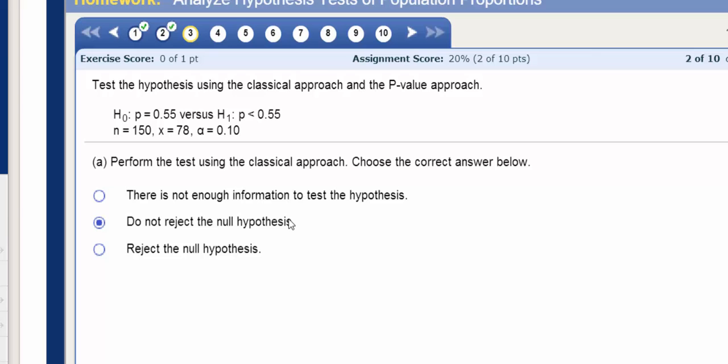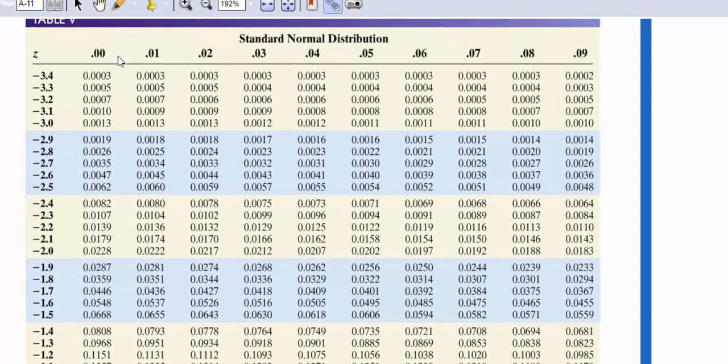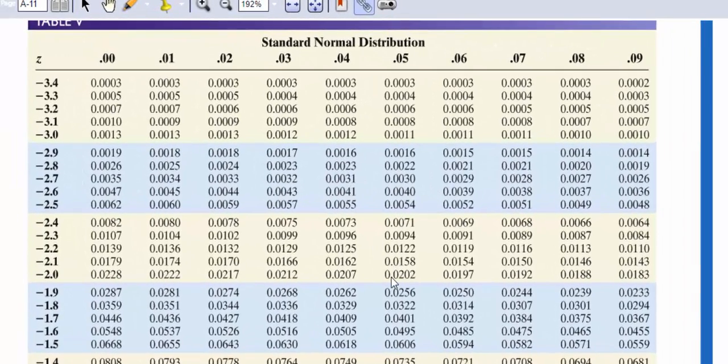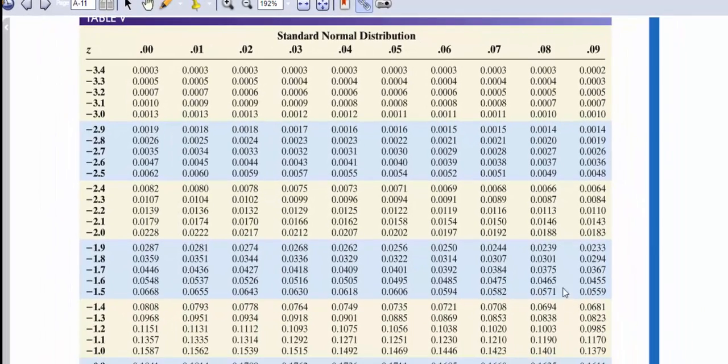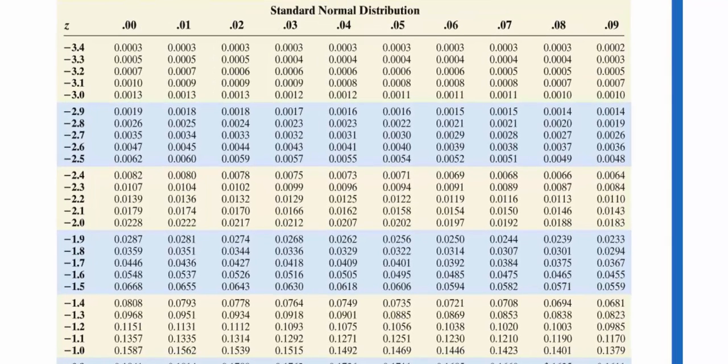But before I move on, I do want to take a look at the table in the back of your book. This is Appendix A-11. If you remember, our level of significance was 0.10. So if I look for 0.10 on this table...